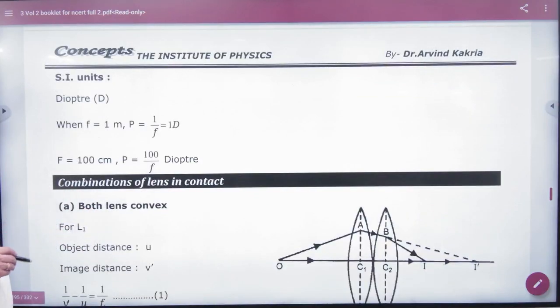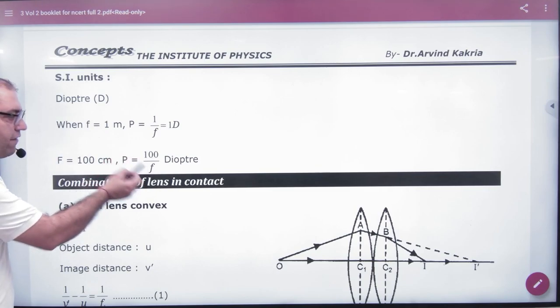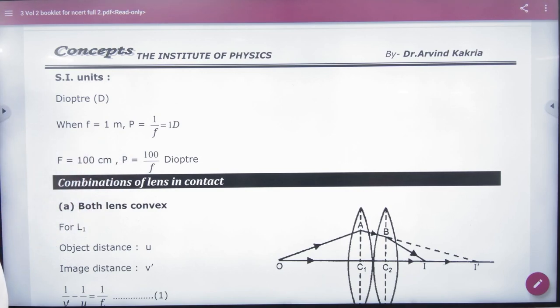The scalar element we have is one by meter. One by meter we call diopter here, D. So the units of power are diopter. Although in CGS this formula is given as 100 upon F, don't forget if focal length is given in centimeter, first convert to meter. So one upon meter will become diopter.